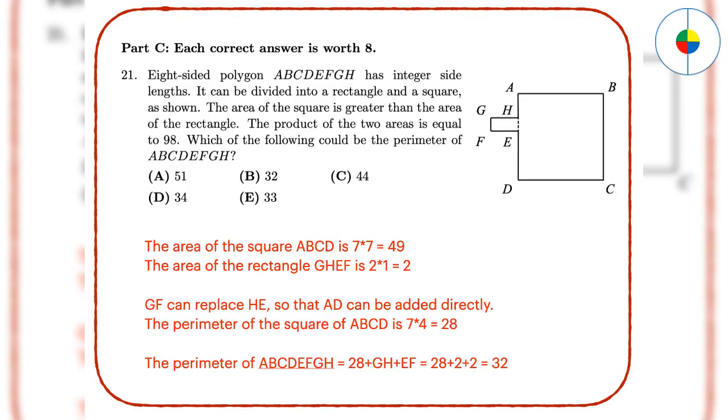Part C, hard questions. Question 21: This is another guessing game. If you know the divisibility rules, 98 can be split to 2 times 49 or 7 times 14. Only 2 times 49 makes sense because 49 is the area of a square. So you know a, b, c, d are 7, g, h, and f, e are 2, and g, f is 1. So the perimeter will be 32.